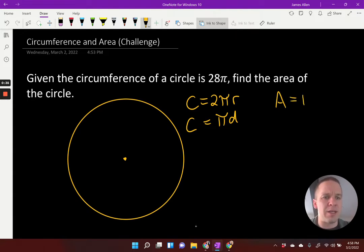What's my area formula? My area is π times the radius squared. So it looks like I need to find the radius if I'm going to find the area of the circle, right?